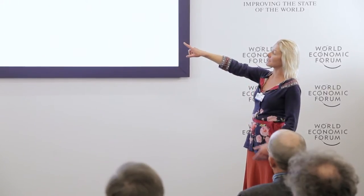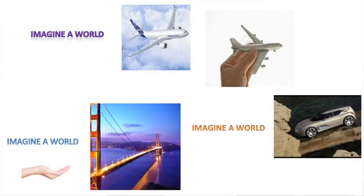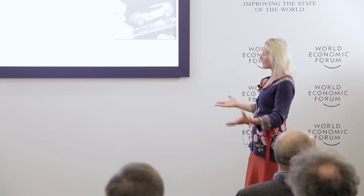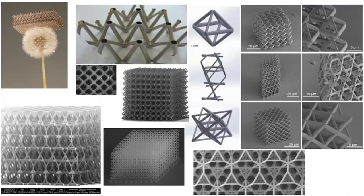Wouldn't it be great if we could make materials in that white space? Imagine an airplane that's really efficient and powerful but weighs as little as a toy airplane, or a car you could pick up and put on your roof after driving home. Or imagine the Golden Gate Bridge, and all the materials it took to construct it fitting in the palm of your hand. We think we've figured out how to approach such a world by introducing the concept of architecture into material design.